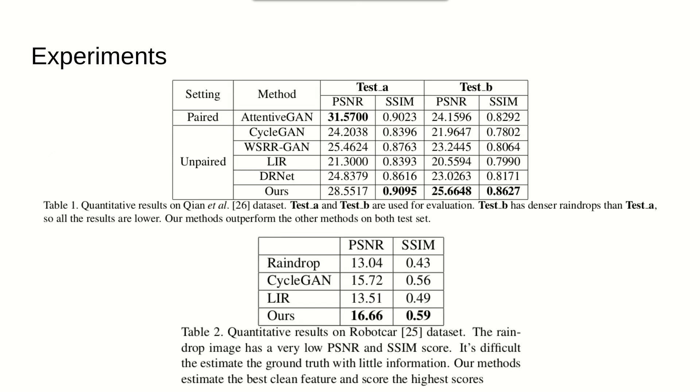Coming to the experiments, PSNR measures the difference between two images for each pixel. SSIM measures the structural similarity between two images. Both metrics are commonly used for evaluating rain drop removal or denoising performance. We compare our results with one of the state-of-the-art paired training methods, AttentiveGAN, and unpaired methods such as CycleGAN, LIR, DRNet, and a dedicated unpaired rain drop removal method, WeatherGAN. Our method outperforms all unpaired methods on both datasets for PSNR and SSIM. Our results are even comparable with paired training methods like AttentiveGAN.